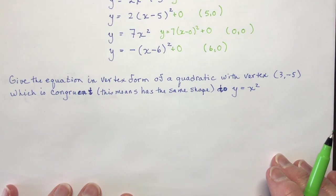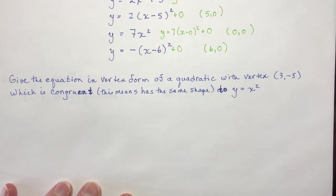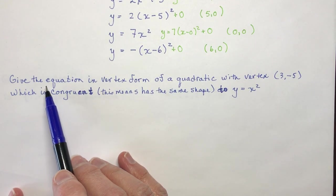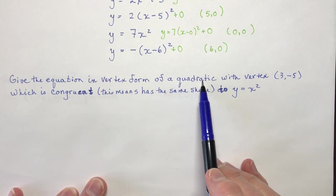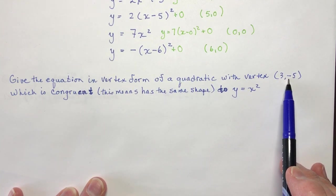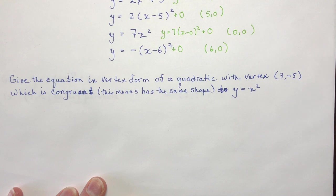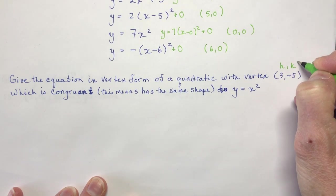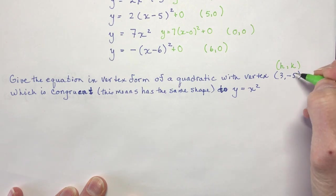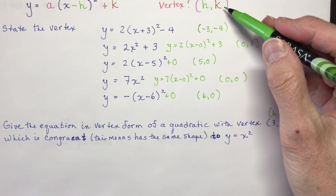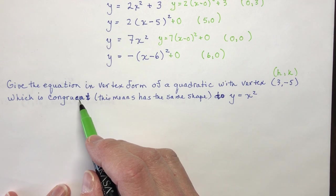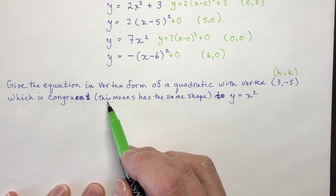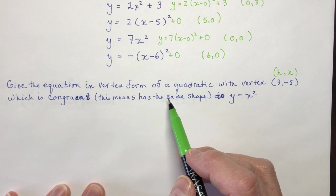Okay, so when we're asked to give the equation of a quadratic in vertex form, like this question here, it says give the equation in vertex form of a quadratic with vertex 3 and minus 5. So as soon as you see vertex, you should write over it, this is h and k. The vertex is h and k. It's up here as well. And here we go again, which is congruent to y equals x squared. So congruent, this just means that it has the same shape.